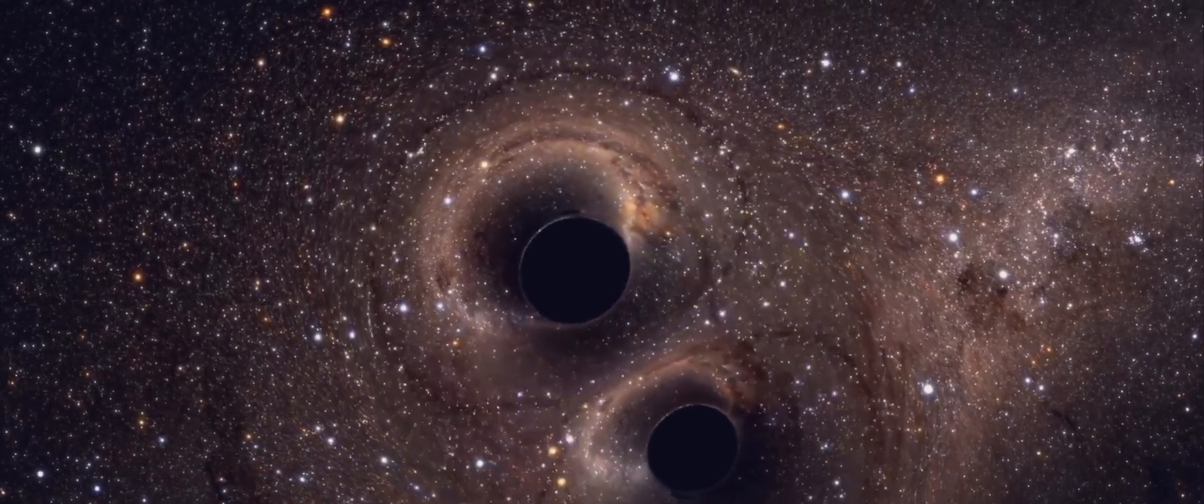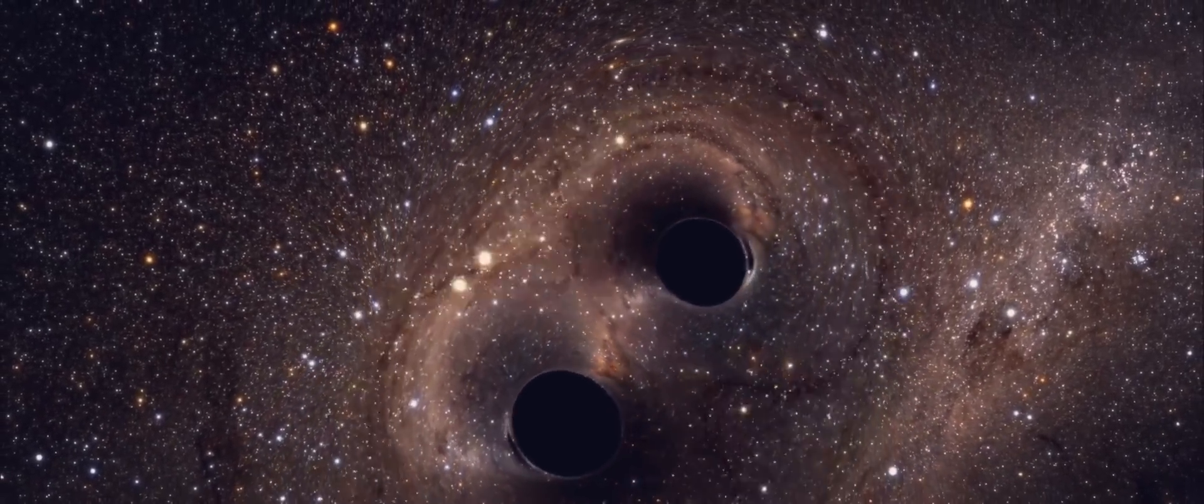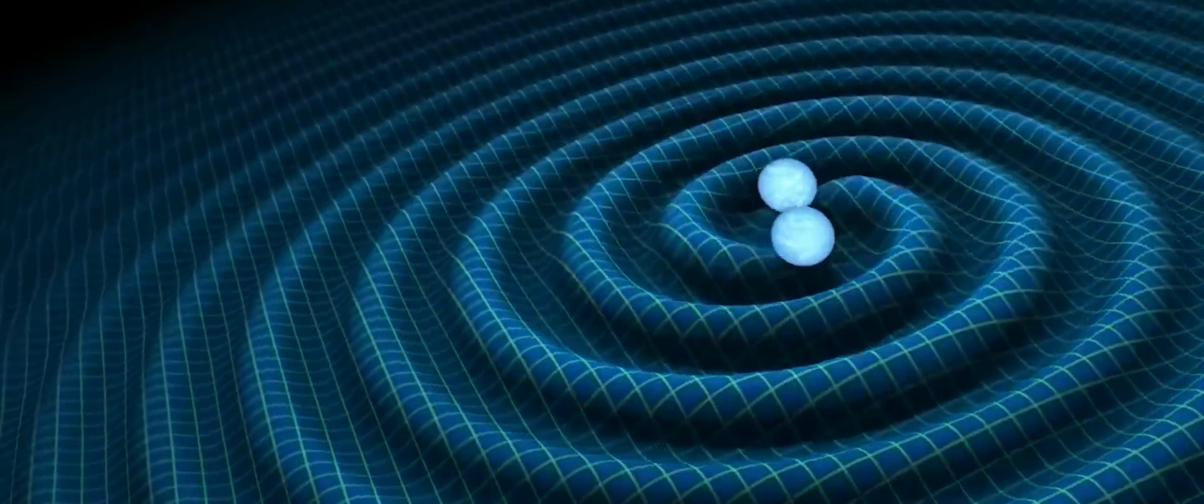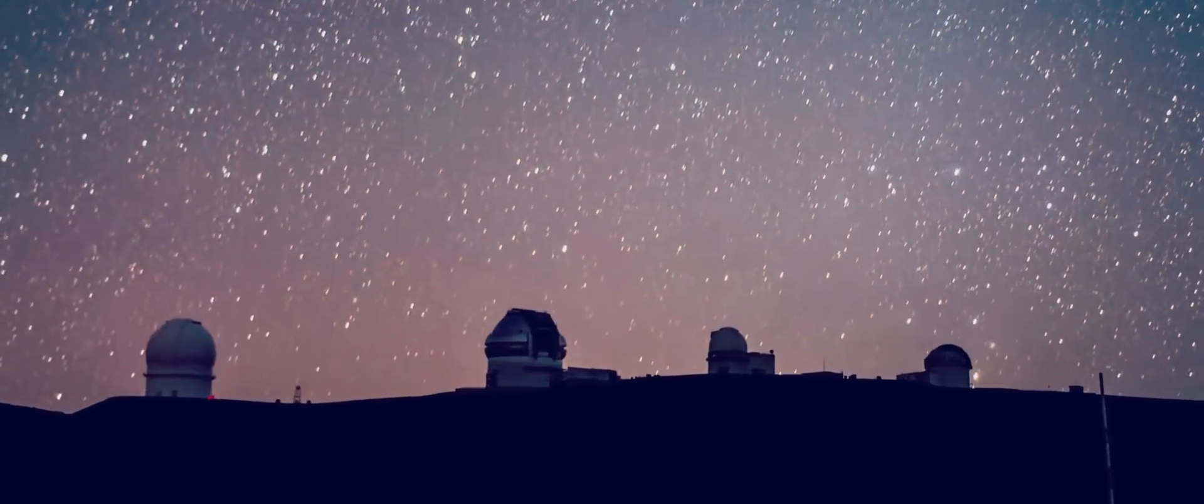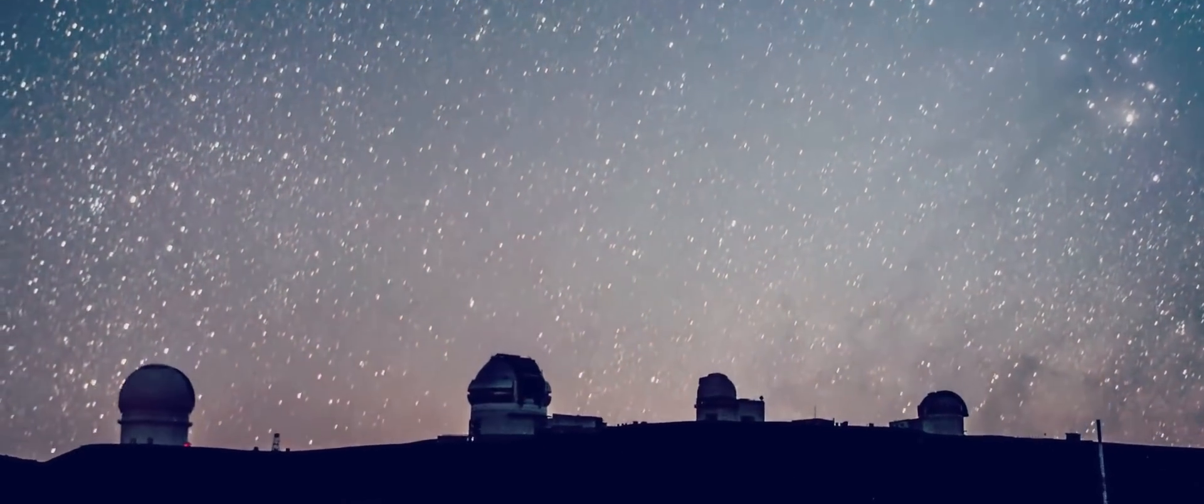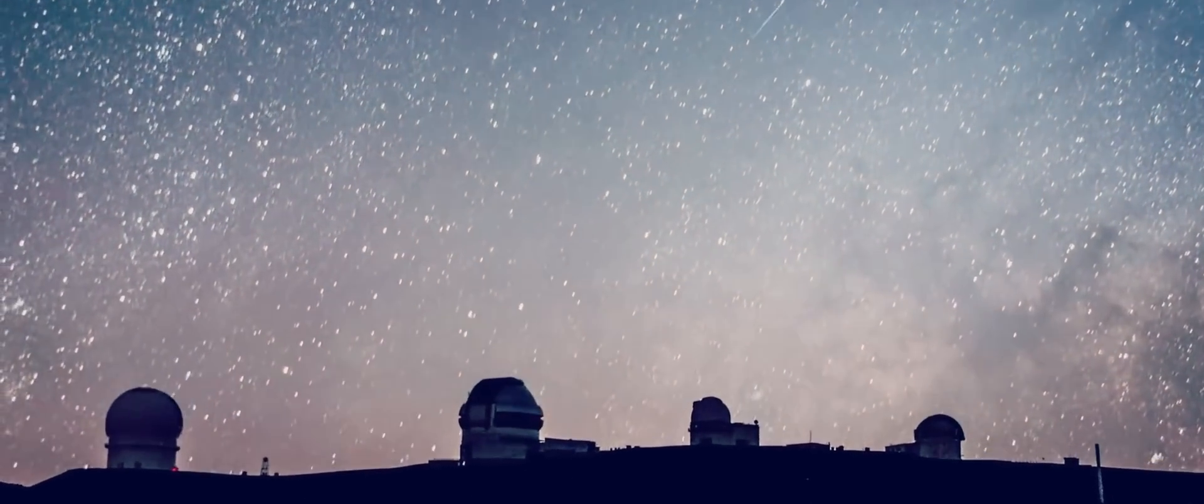Einstein's equations have now been tested over and over again in a whole variety of circumstances. The detection of gravitational waves just a couple of years ago is like the crowning triumph of Einstein's math. A hundred years ago, the math says there should be ripples in the fabric of space. A hundred years later, we finally detect ripples in the fabric of space.